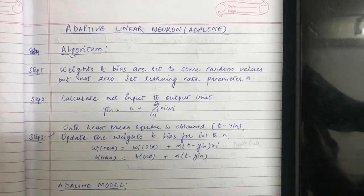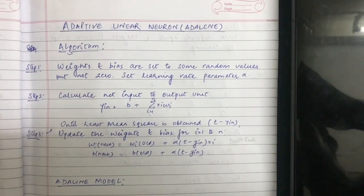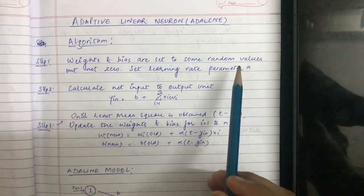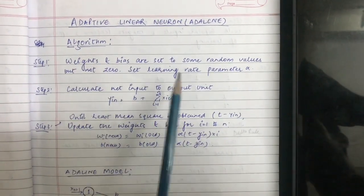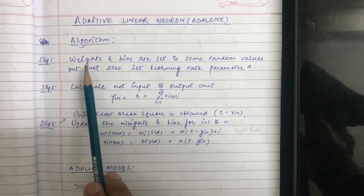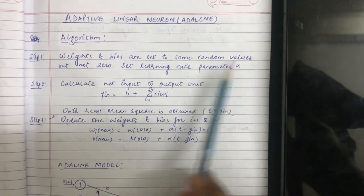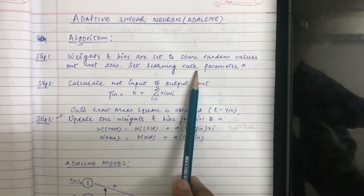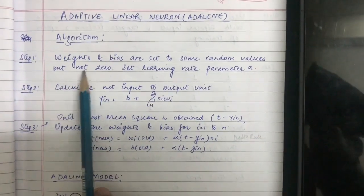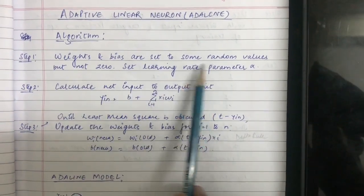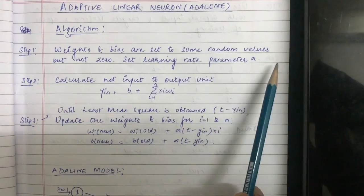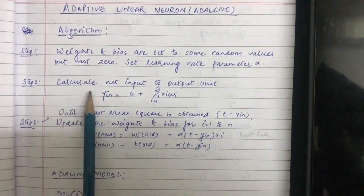Hello friends, I am back again with a new tutorial. We'll be talking about ADALINE — the Adaptive Linear Neuron. Let us understand the algorithm. Step one: weights and bias are set to some random values, but not zero. Set learning rate parameter alpha. Unlike in the perceptron where we were taking weights and bias value to be zero, here we'll assign them some random values.